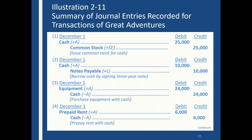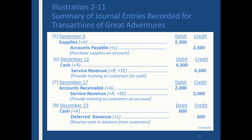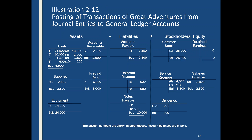The next slide is a representation of all the transactions we posted in those 10 examples. There are 10 transactions, so you can see the debits and credits. These were all the posting effects — everything that happened to cash, everything that happened to accounts receivable, and so on.